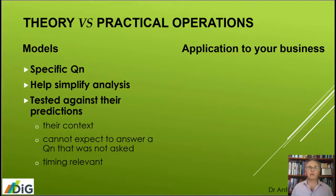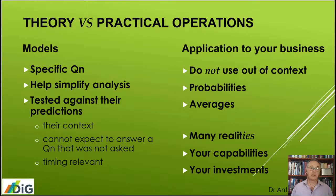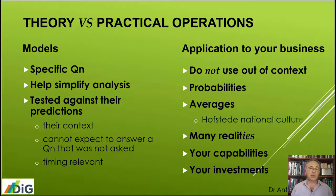Now, how do you bring those ideas into your business? Well, first of all, be careful not to use the model out of context. Remember, especially when they're based on quantitative empirical evidence or statistical evidence, they represent probabilities and averages. Hofstede points that out very clearly when he talks about national culture — he said we've got dimensions about national culture, but they're just averages across many people.